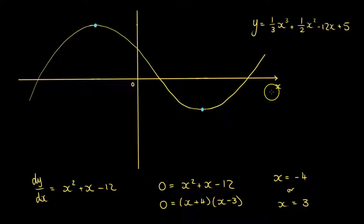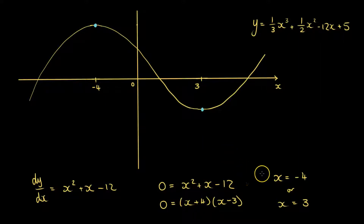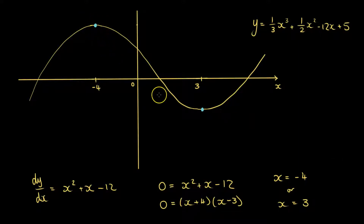Because we have the graph here, we know straight away that the maxima must have an x value of minus 4, and the local minimum must have an x value of 3. But what about if we didn't have this graph — if we didn't draw it? How could we determine which one of these x values belonged to the maximum or to the minimum?